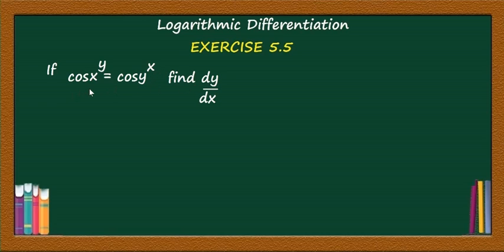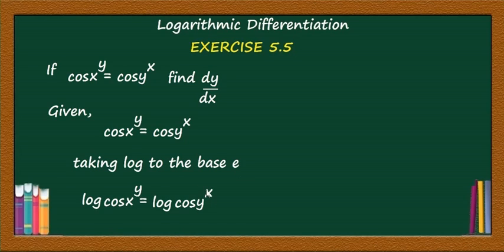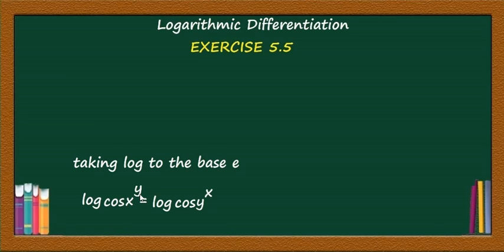Here, both left hand side and right hand side are exponential functions. It is given that cos(x)^y = cos(y)^x. Taking log to the base e, we have log of cos(x)^y equal to log of cos(y)^x. Using the law of logarithm, this becomes y·log(cos x) = x·log(cos y).